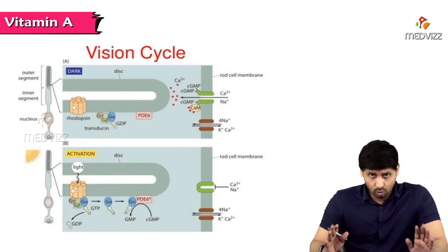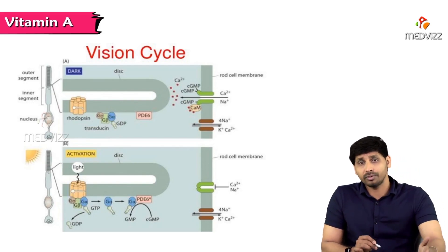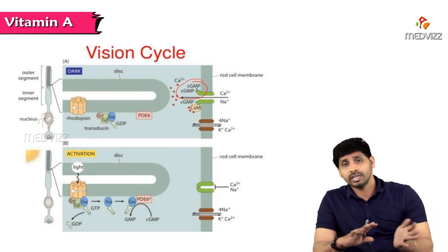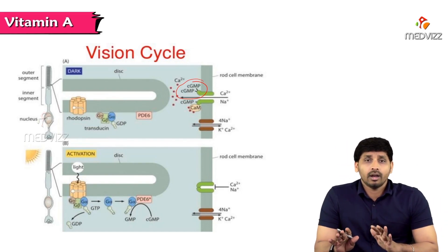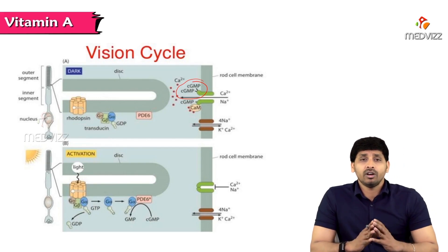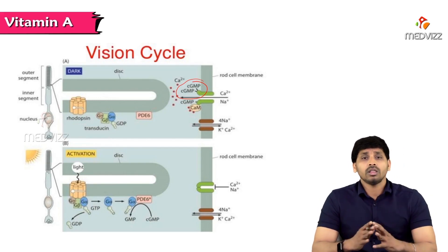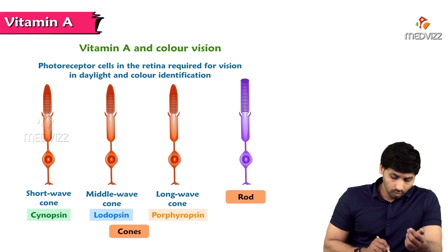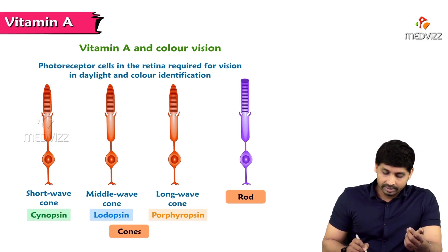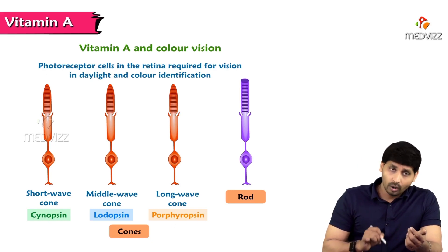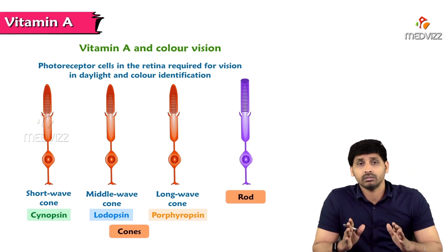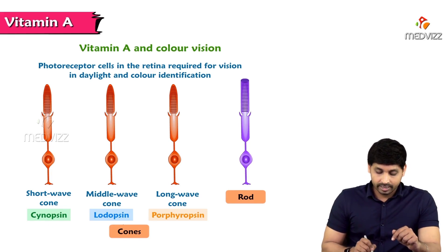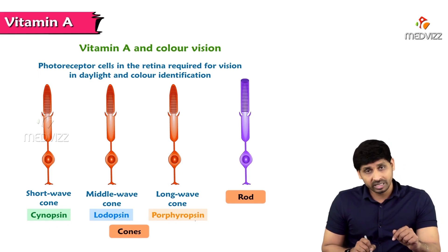In the visual cycle, calcium ion channels open, cyclic GMP levels change, and calcium is transported out of the cell. Sodium channels are also involved in opening calcium-gated channels. Regarding Vitamin A and color vision, cone cells contain pigments called cyanopsin, iodopsin, and porphyropsin, which are useful in differentiating colors.